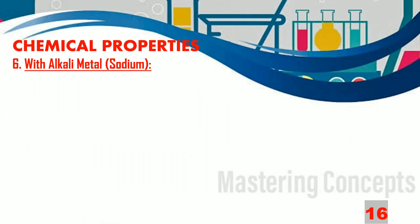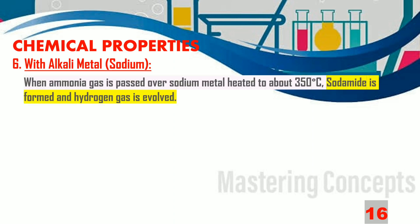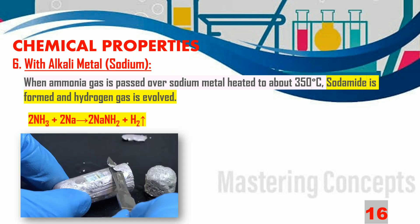Now let us find out how ammonia gas reacts with alkali metals like sodium. At a temperature of about 350°C, ammonia gas reacts with sodium metal to produce sodamide, and hydrogen gas is evolved.